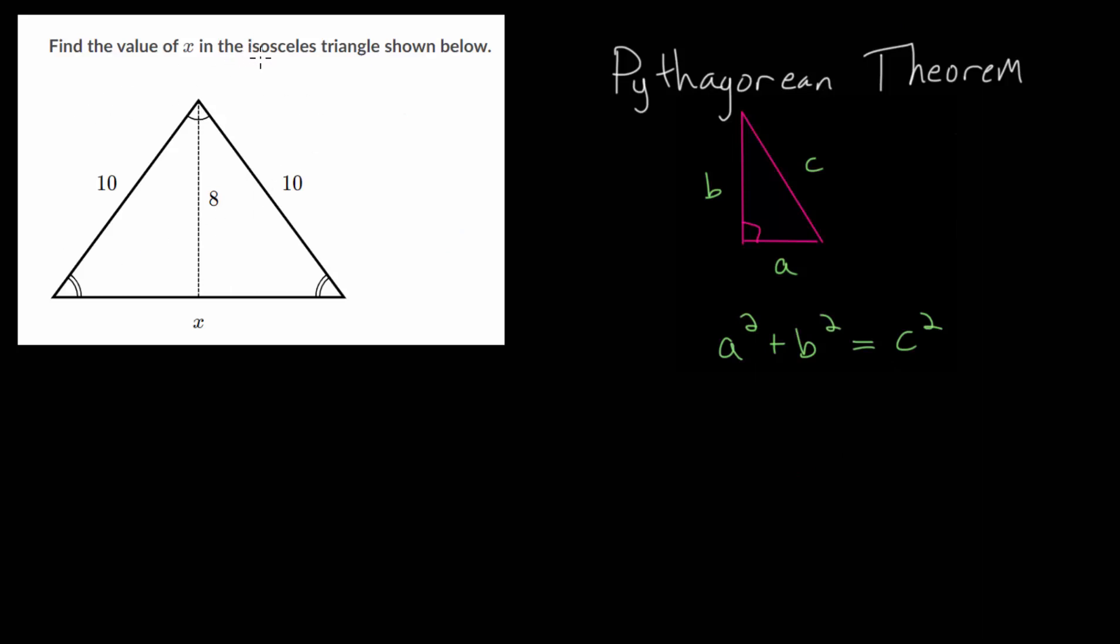Also remember that isosceles triangles have two equal side lengths and two equal angles.